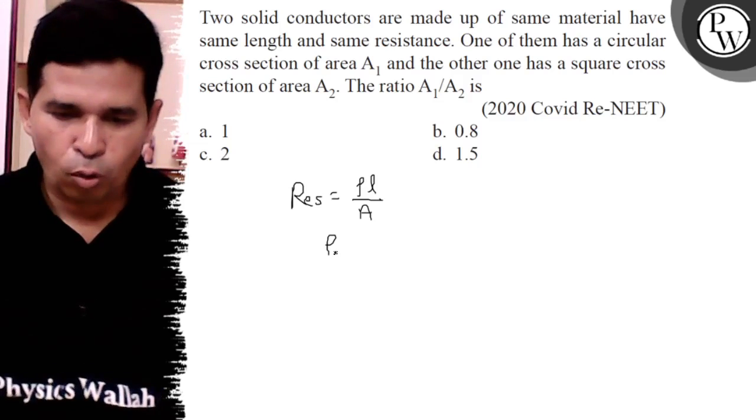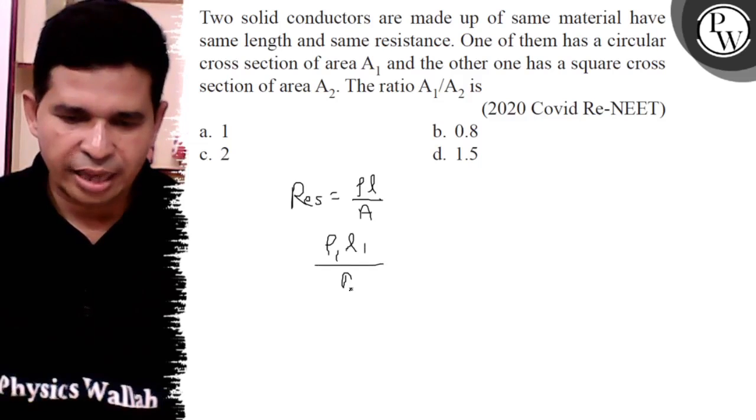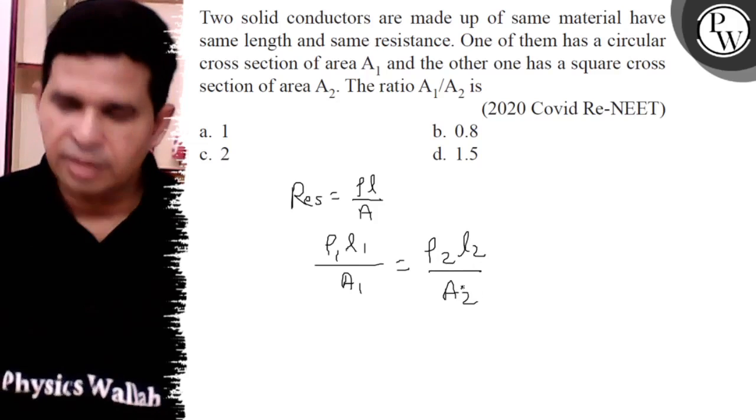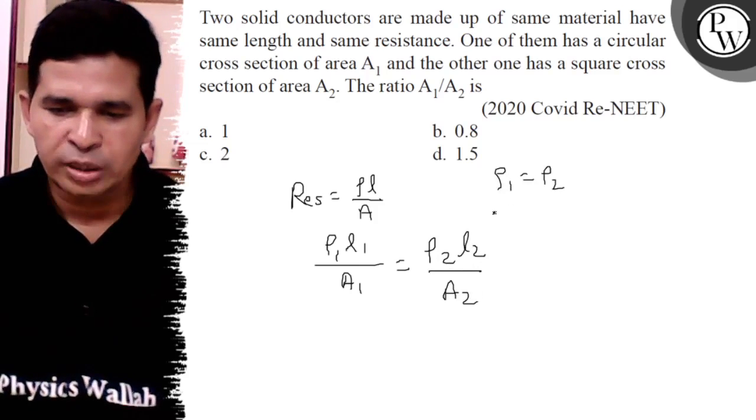ρ₁L₁/A₁ is equal to ρ₂L₂/A₂ because resistance is the same. Here ρ₁ is equal to ρ₂ and length L₁ is equal to length L₂.